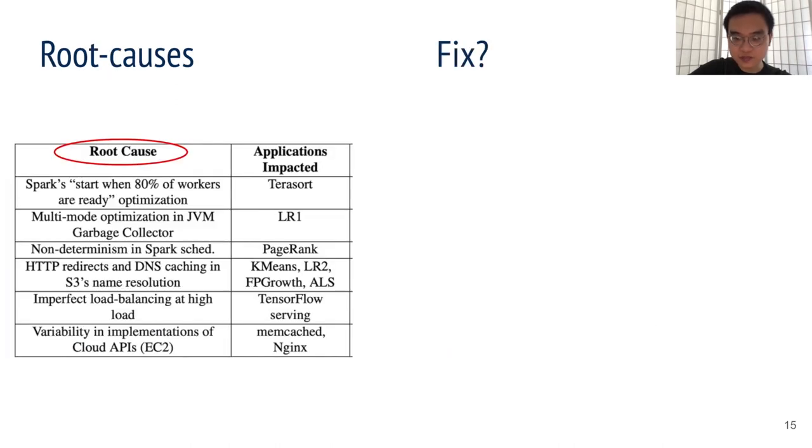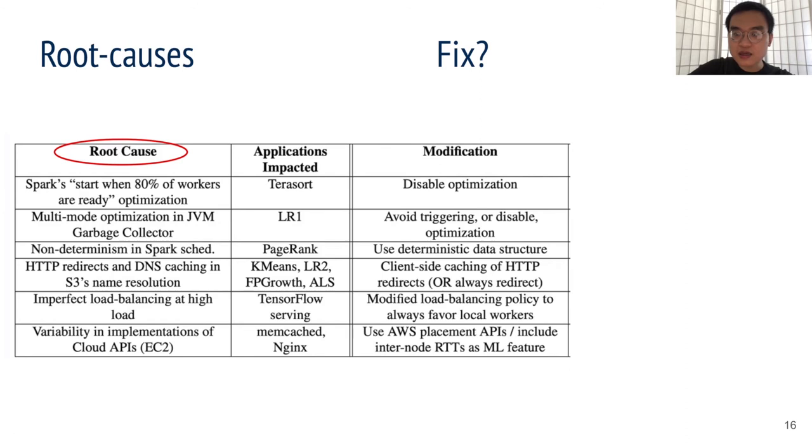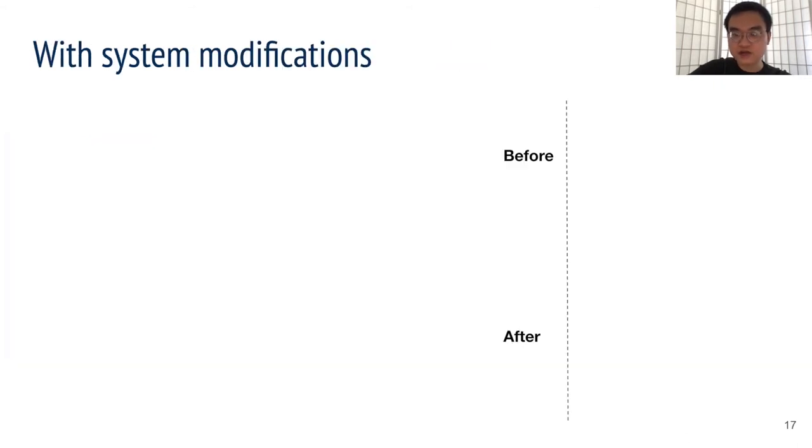Knowing these root causes, can we fix the system to adjust them? Indeed, it appears that once we identify the root causes, we can modify the applications to avoid them, such as simply disabling the optimizations. Here are how effective these fixes are to prediction accuracy. Remember, this is still under the best case setup though.